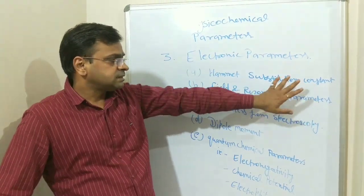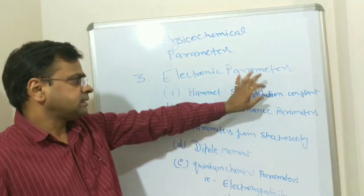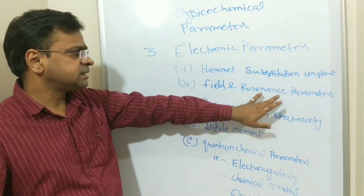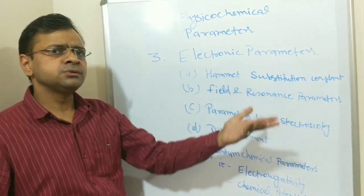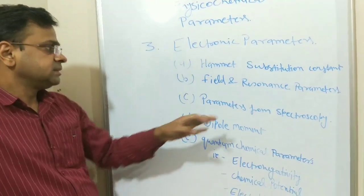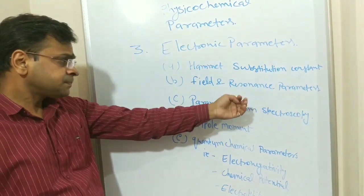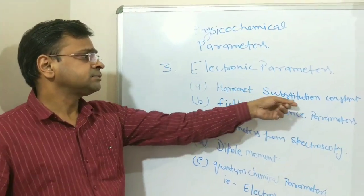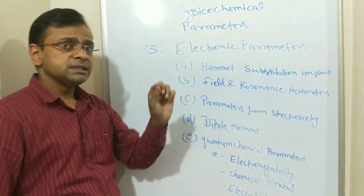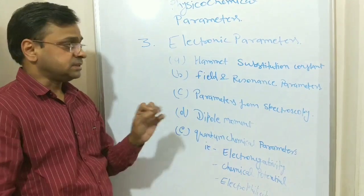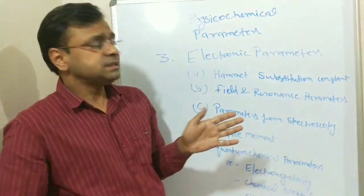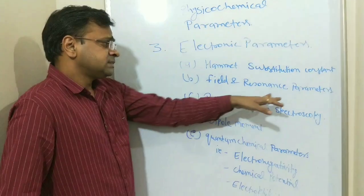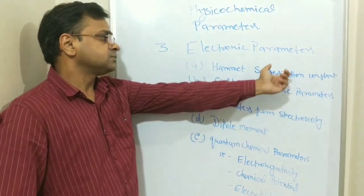Hammett substitution constant is the most important parameter that I have told you earlier. The second parameter is field and resonance parameters based on the resonance ability of a molecule. Some molecules have resonating structures and some molecules do not have resonating structures. And some field effects are also there. So these are also important. They have some impact in Hammett substitution constant also, because if we place benzoic acid in ortho position and in para position, so in some positions there is resonance effect. But I am not going to describe all these because it is a very lengthy topic. So field and resonance parameters incorporate with Hammett substitution constant also.